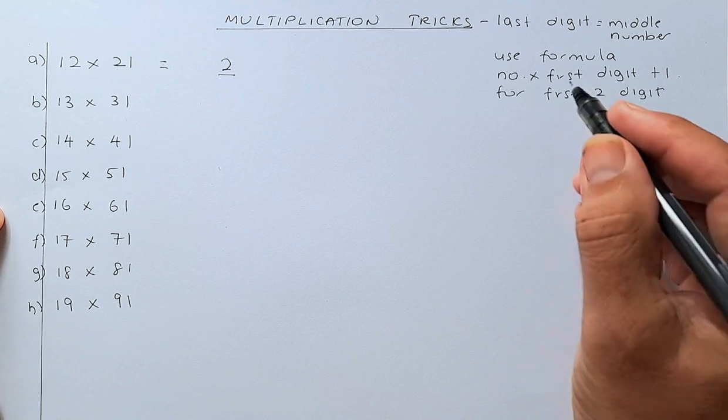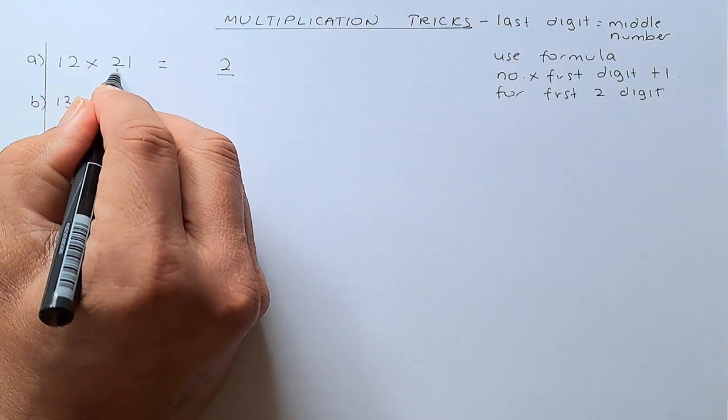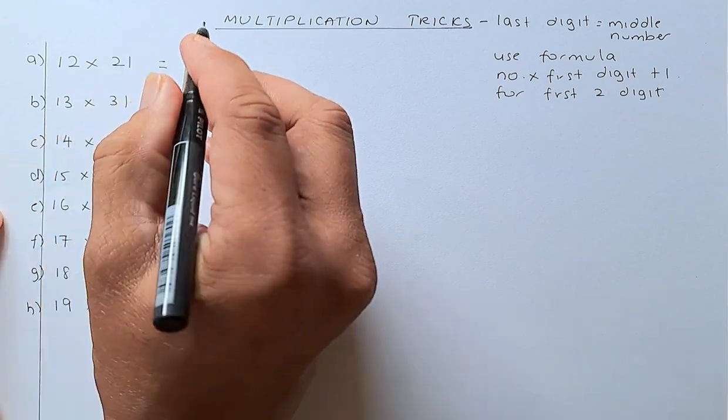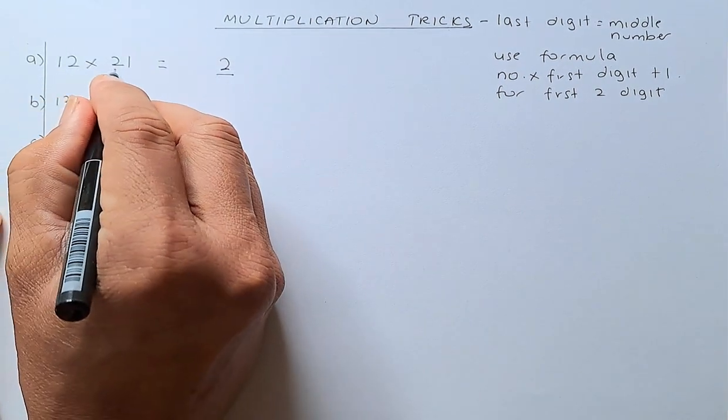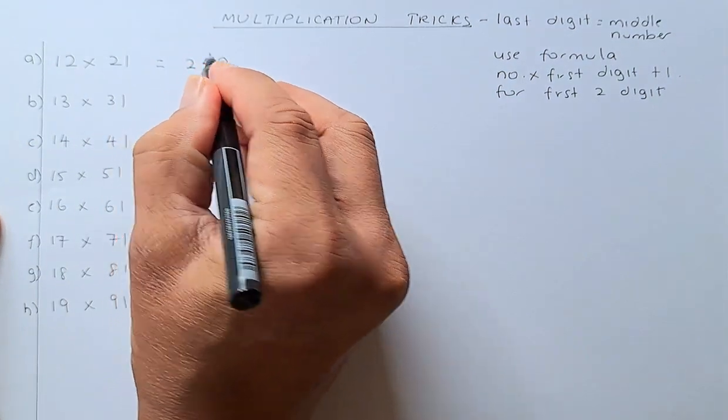To get the first digit, use the formula: this number multiplied by 2 plus 1. So, 12 times 2 is 24 plus 1 is 25. So, that is how you got the answer.